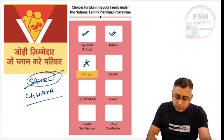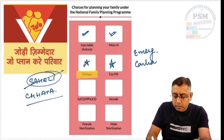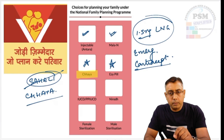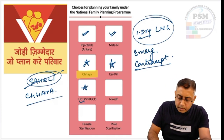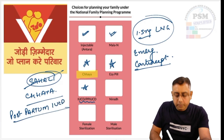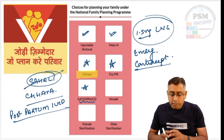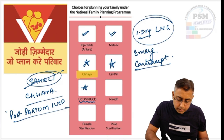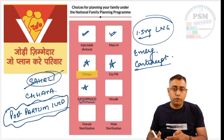Then we have Easy Pill — a potential MCQ. Easy Pill is emergency contraception containing 1.5 mg of Levonorgestrel, given as a post-coital pill within 72 hours of unprotected intercourse as a single tablet. Next is IUCD and PPIUCD. PPIUCD is postpartum intrauterine copper device insertion. IUCD has to be inserted within 10 days of the start of the menstruation cycle, and PPIUCD is within 24 hours of delivery, available at the sub-center level where ANMs are trained.